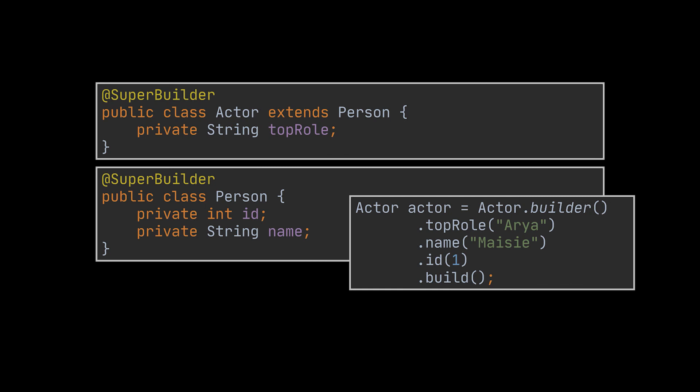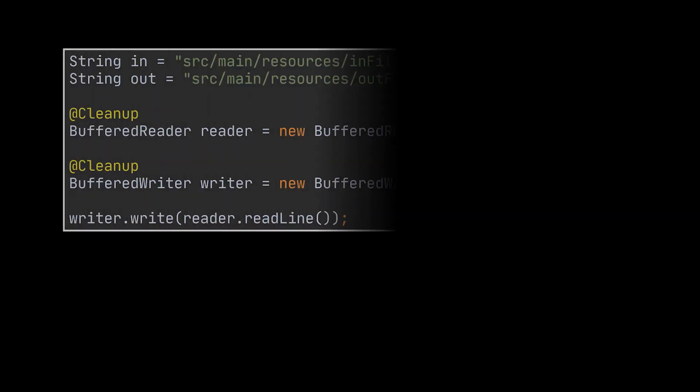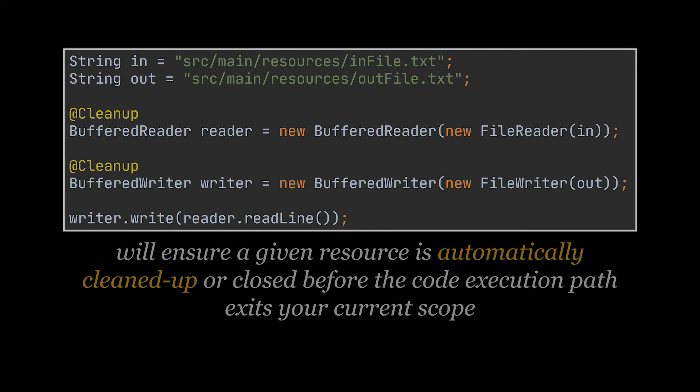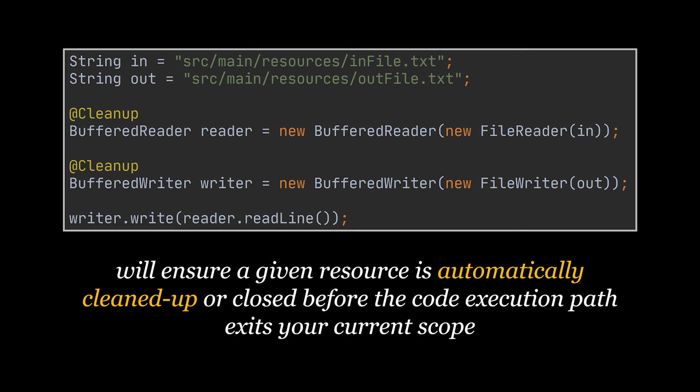The next annotation is about resource management. Managing resources can be tricky and involves a lot of boilerplate code in Java. Lombok is here to help with the @Cleanup annotation. This annotation ensures a given resource is automatically cleaned up or closed before the code execution path exits your current scope. In the example you can see we use it to close our BufferedReader and BufferedWriter without using try-with-resources, finally clauses, or explicit close method calls.